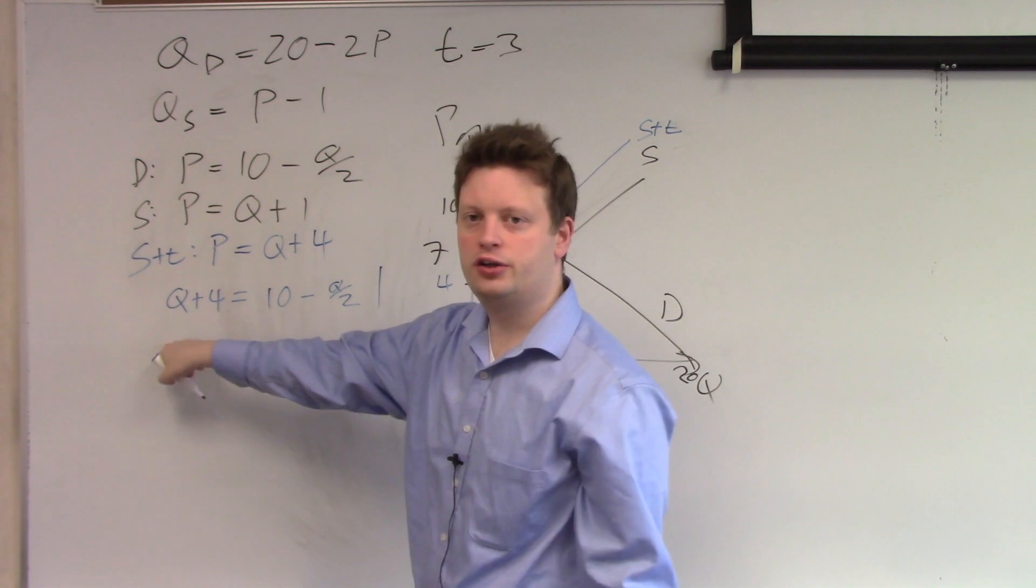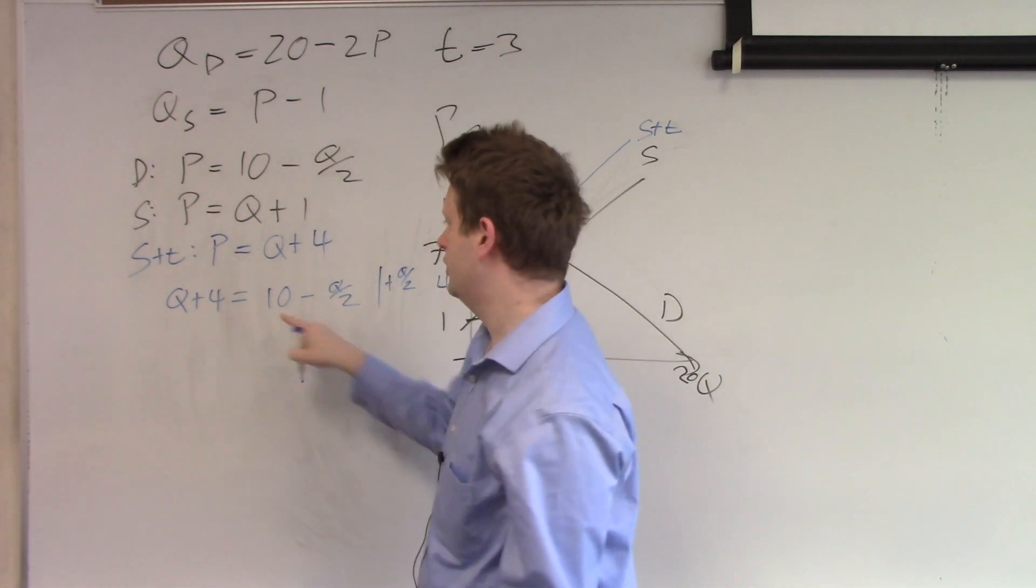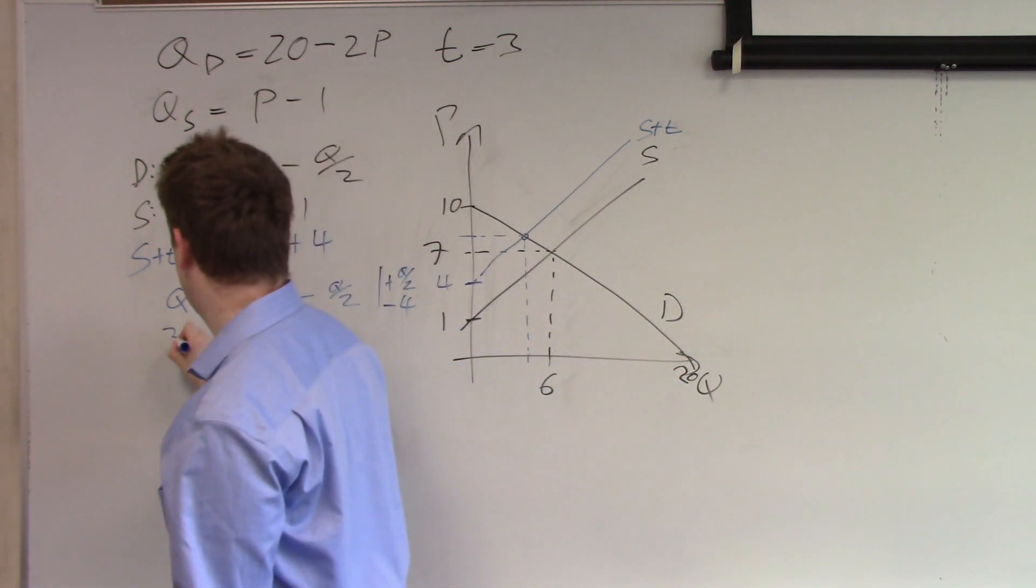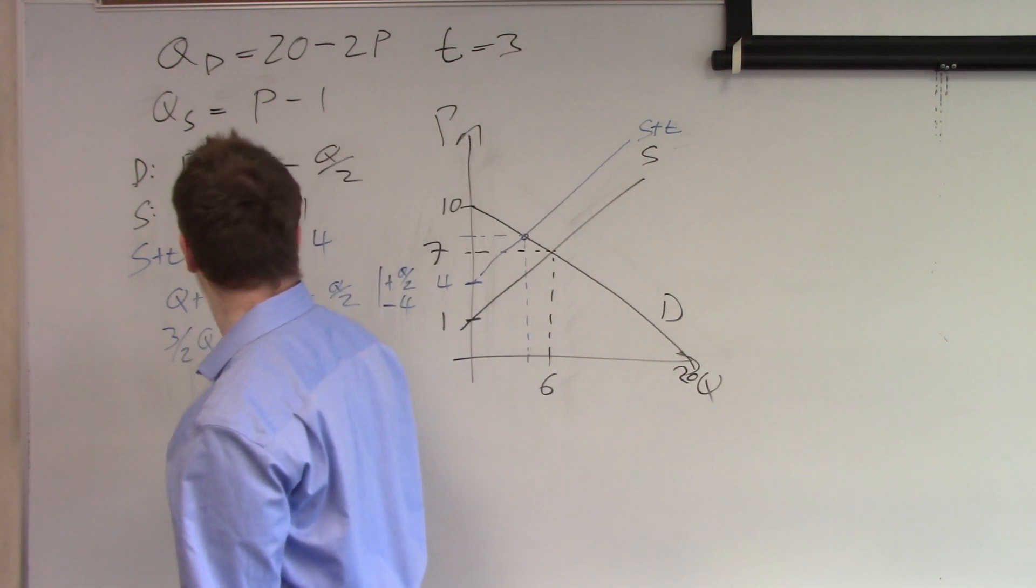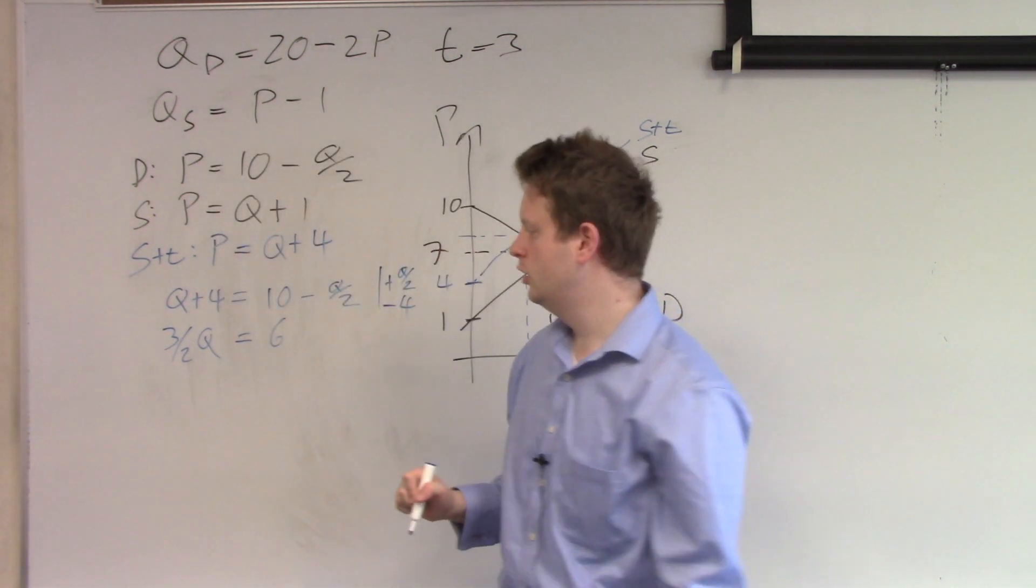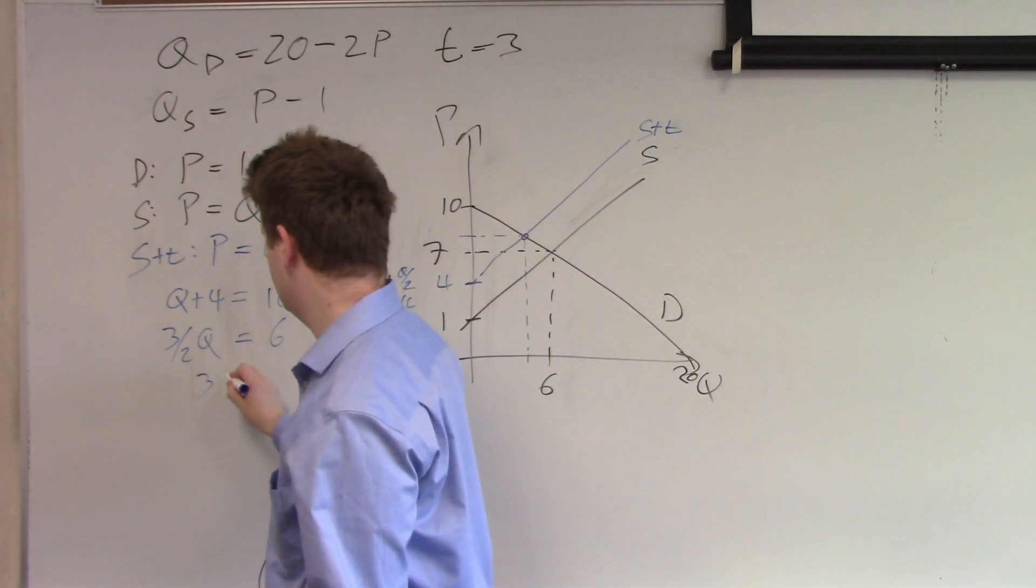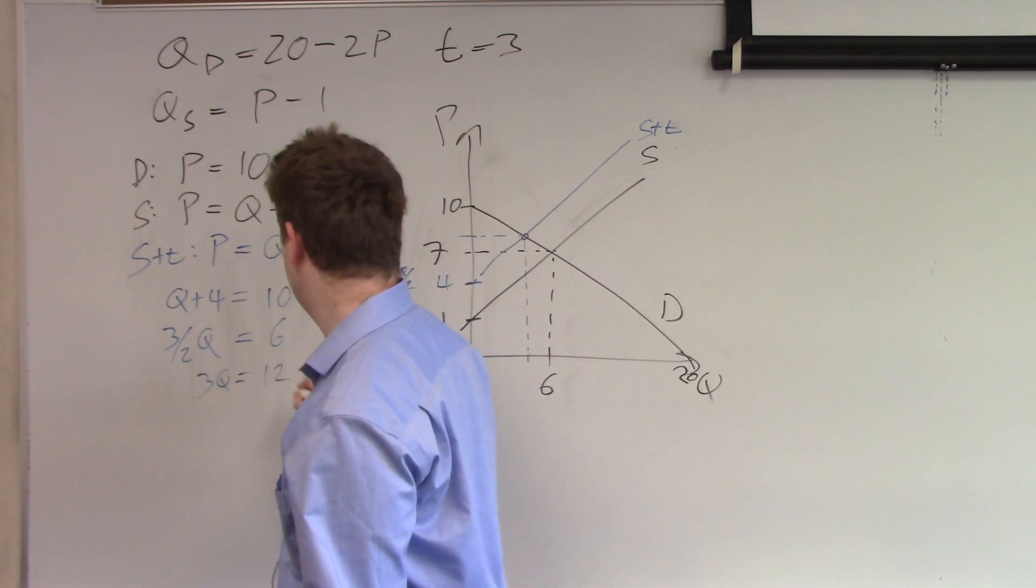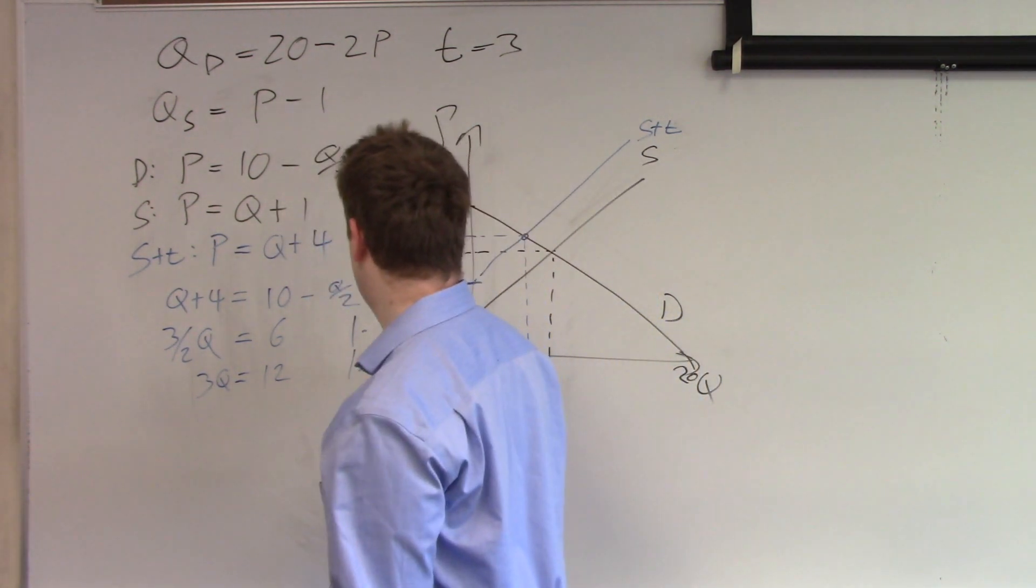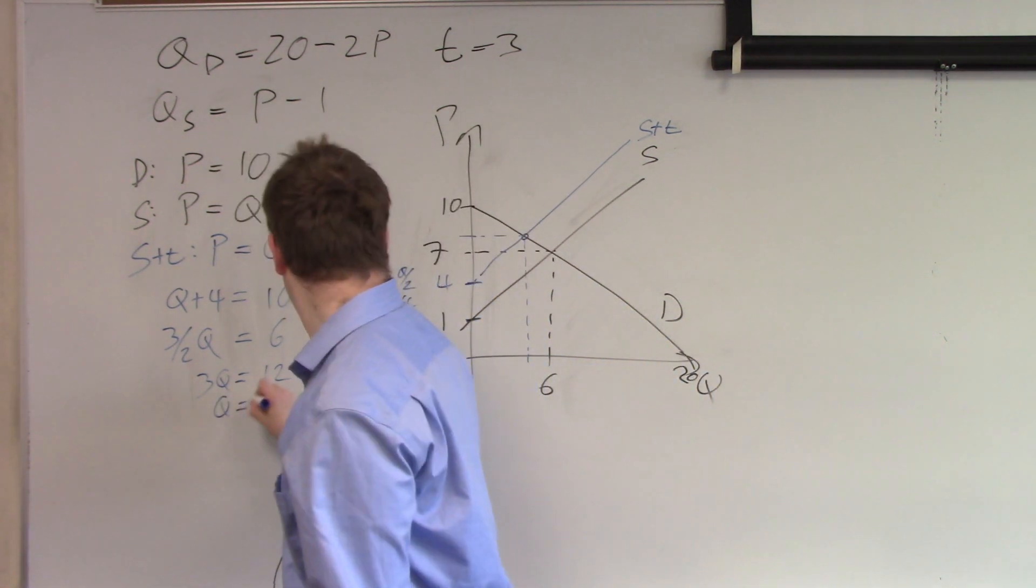Let's put this to the other side plus Q over 2. Let's put the 4 on the other side minus 4 and we get 3 over 2Q equals 6. I don't like this fraction so I multiply by 2. 3Q equals 12. Now I divide by 3 and I get Q equals 4.